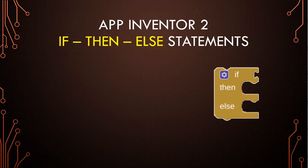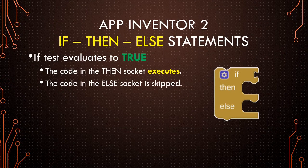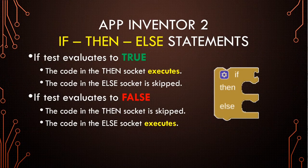The next variant is the if-then-else. It looks just like the if-then, except there's an extra socket added for the else. Once again, the if-test has to evaluate to true. If it does, then the code in the then-socket executes and the code in the else-socket is skipped. But if it evaluates to false, then we execute the code in the else-socket and skip the code in the then-socket. So it's kind of a choice — based on that test, we're going to do one or the other block of code, and the other one gets skipped.